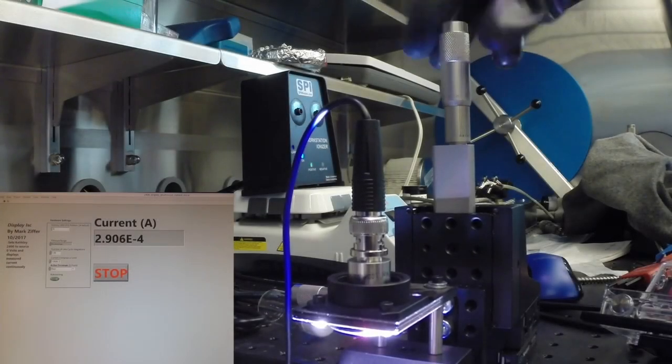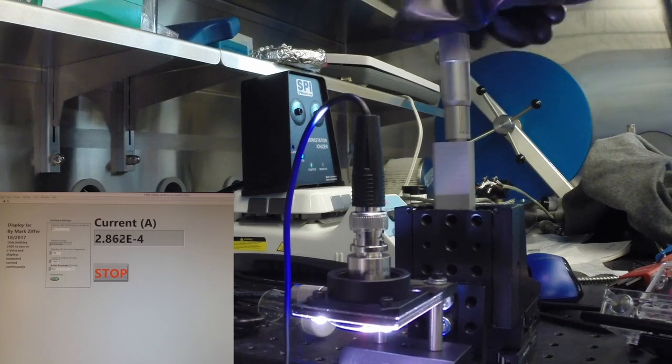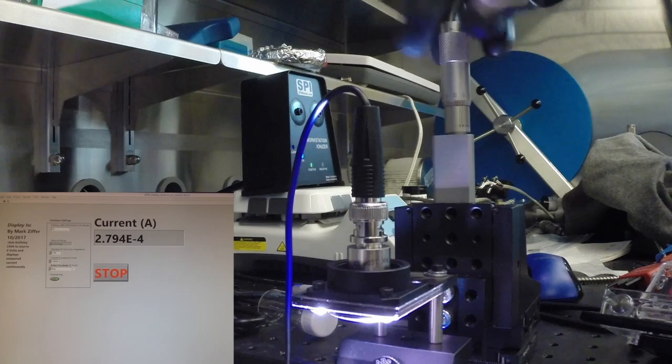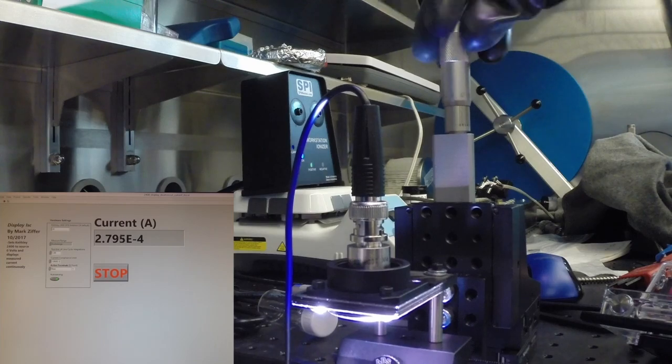Then, the Z micropositioner can be adjusted to change the photocurrent until it reaches the desired value. Raising the photodiode decreases the photocurrent and vice versa. Now we're ready to begin measuring solar cells.